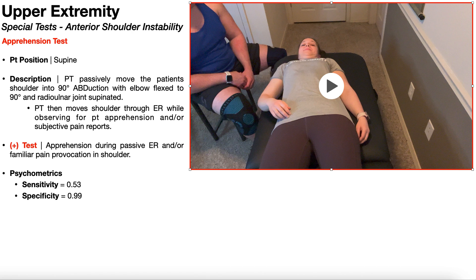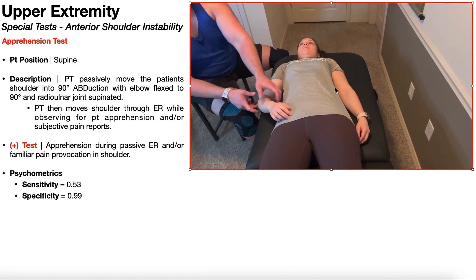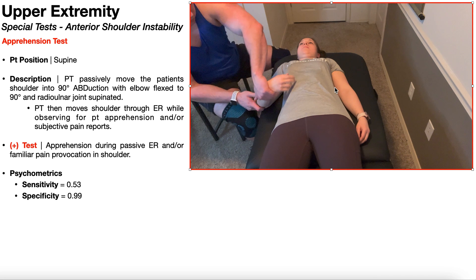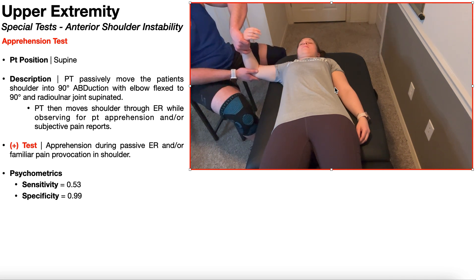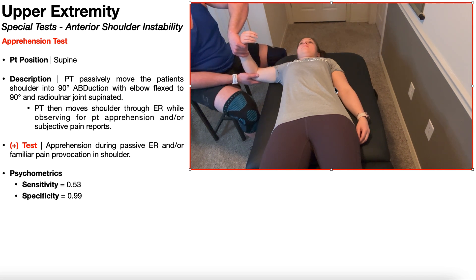First is the apprehension test. The patient is positioned in supine. The PT passively moves the patient's shoulder into 90 degrees of abduction with the elbow flexed to 90 degrees, and the radial ulnar joint — or forearm — is supinated. You know you're in the correct test position when the patient's anterior forearm faces them, or away from you as the PT.